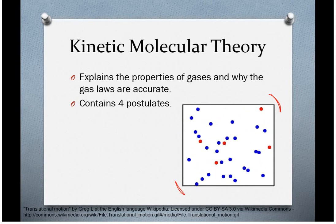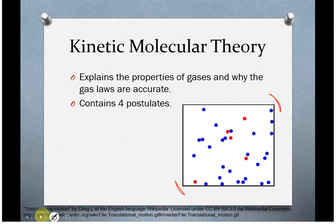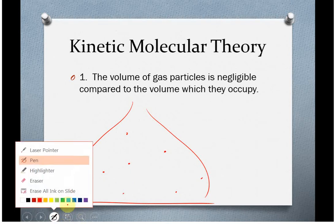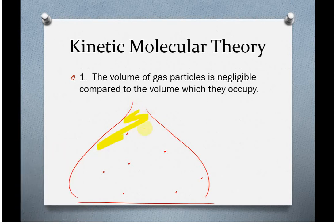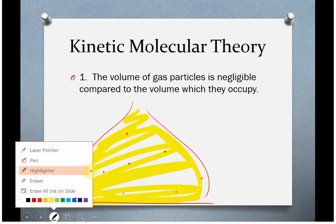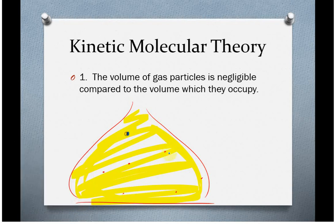and then the particles are in rapid, random, constant motion. So, the first postulate says the volume of gas particles is negligible compared to the volume that they occupy. So, like consider a flask, for example. You have a few gas molecules in here spread out. Now, what this is really saying is that the volume of this whole container is very, very large in comparison to the small amount that these gas particles occupy.